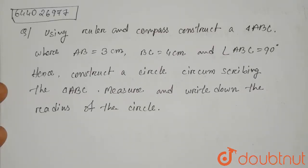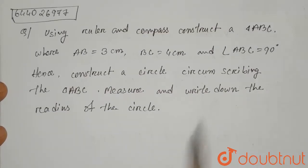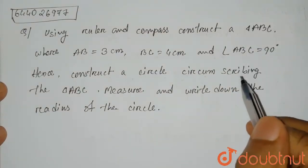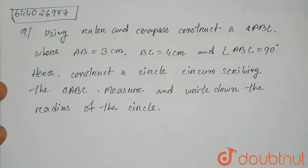Hello everyone. The question is: using ruler and compass, construct a triangle ABC where AB equals 3 cm, BC equals 4 cm, and angle ABC is 90 degrees. Hence construct a circle circumscribing the triangle ABC, and measure and write down the radius of the circle. So here it is given that angle ABC is 90 degrees, which means the triangle will be a right angle triangle.